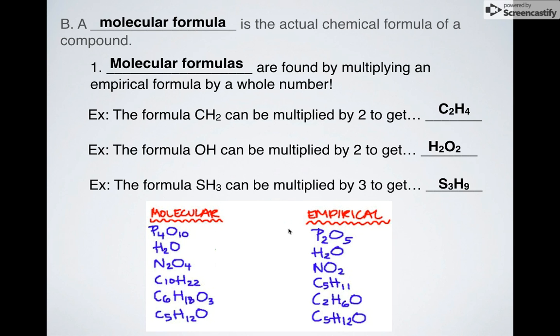Now, take a look. So here are some empirical formulas: P2O5, H2O, NO2, C5H11. Notice, I can't reduce these down any simpler. They've been reduced as far as possible. But molecular formula-wise, look, I can multiply this by two and get P4O10. I can take this and multiply it by two. I can take this and multiply it by two. I can take this and multiply it by three.